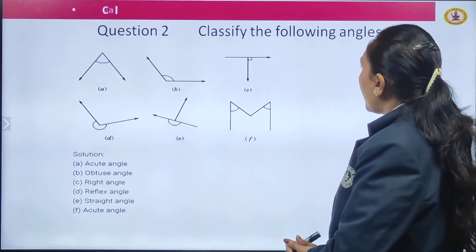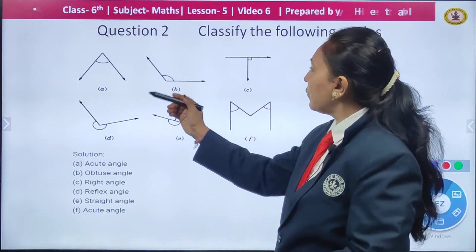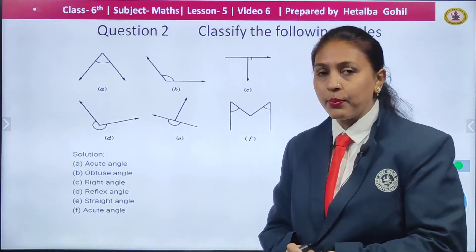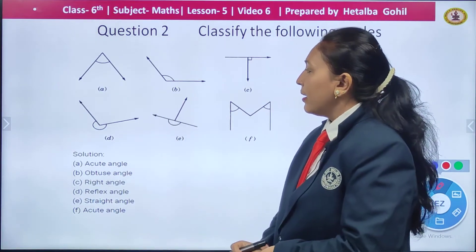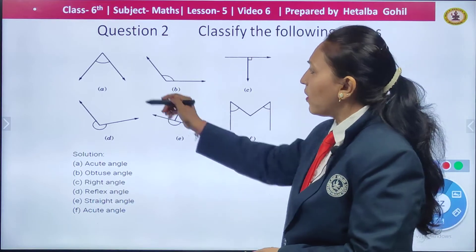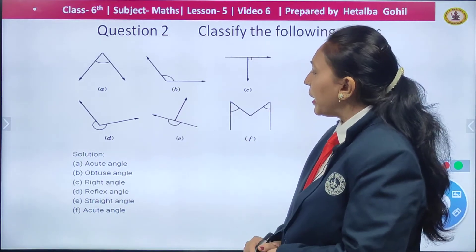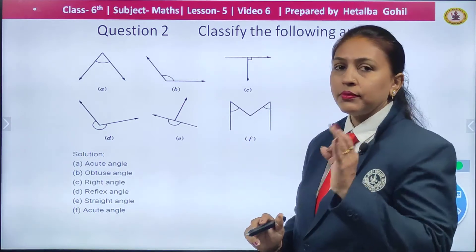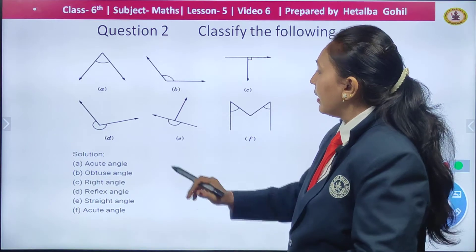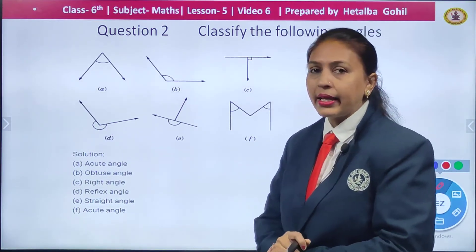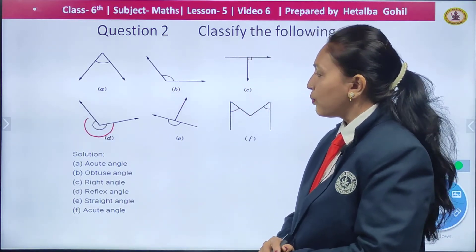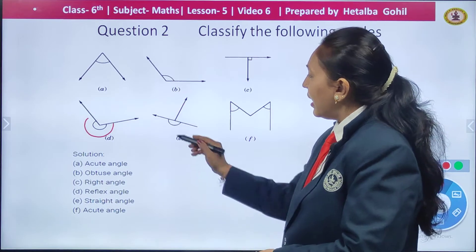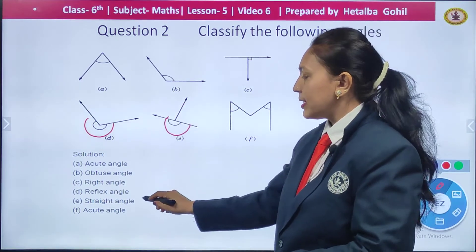Next, question number 2: classify the following angles. A few angles are given to you; you have to observe them and tell what type of angle they are. The first one is an acute angle because it is less than one fourth. Similarly, B is more than one fourth, so it is an obtuse angle. C is exactly one fourth, that is a right angle. In D the angle is more than half, so it is a reflex angle. E is exactly half, so it is a straight angle.